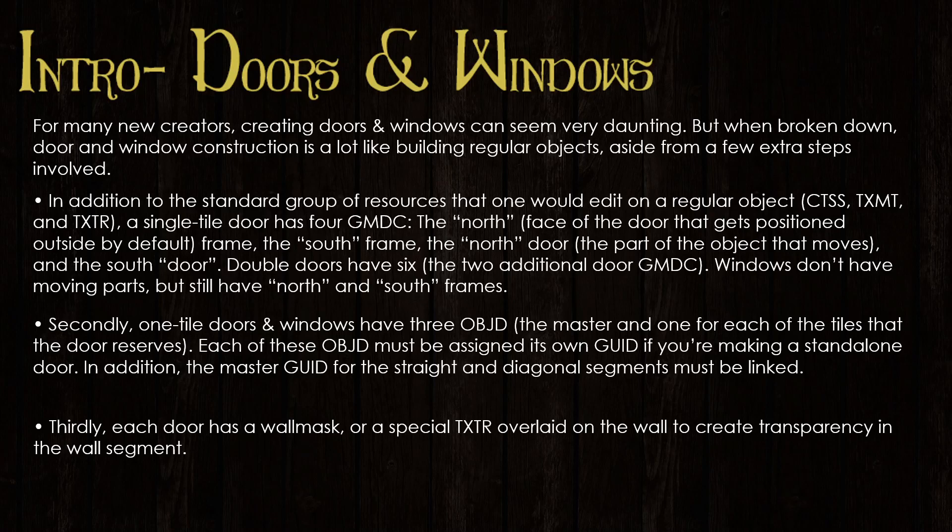Thirdly, each door has a wall mask — a special TXTR overlaid on the wall to create a transparency in the wall segment. Essentially what the wall mask does is cut a hole in the plain wall so that you can't see the wall through the frame.